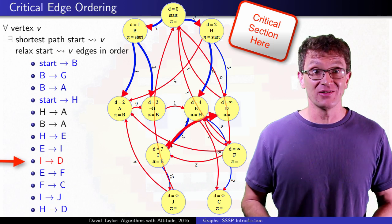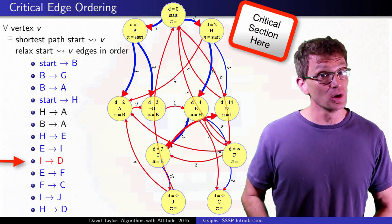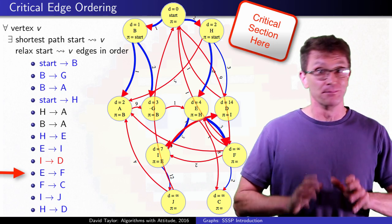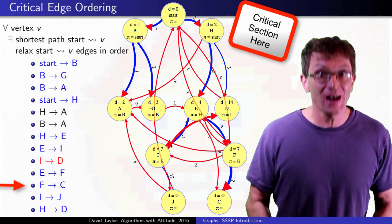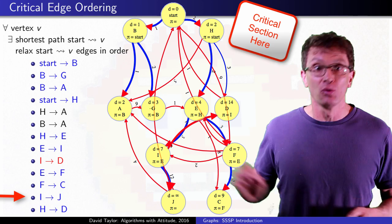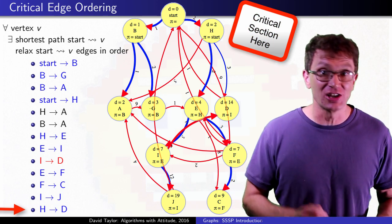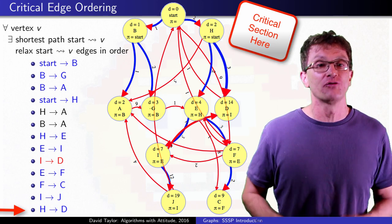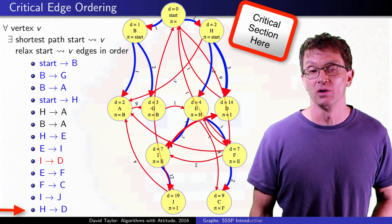Sometimes, like if you relax the ID edge here, it will temporarily give me some non-shortest path to D, but when I get around to relaxing the rest of the critical edge ordering, that will get fixed. So when we relax the HD edge here afterwards, all vertices will have the proper shortest distances.